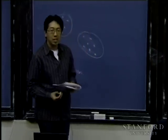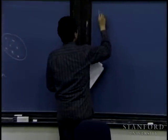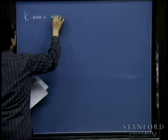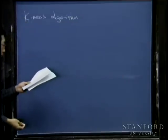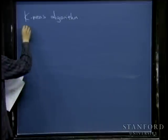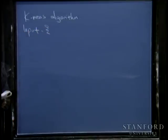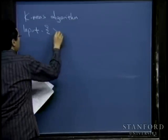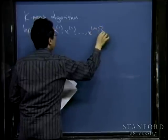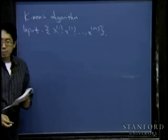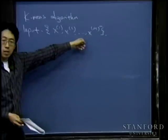Let me write out the k-means clustering algorithm for finding clusters in a dataset. The input is an unlabeled dataset x1, x2, up to xm. In unsupervised learning, you'll see datasets with just the x's and no class labels y.